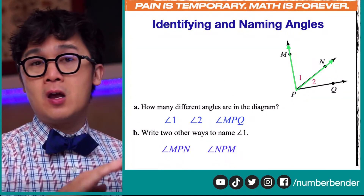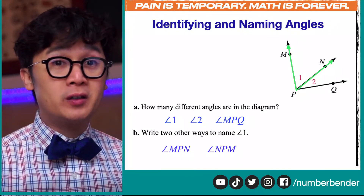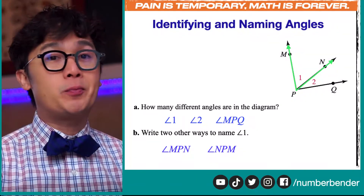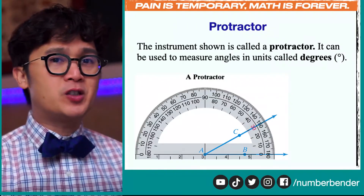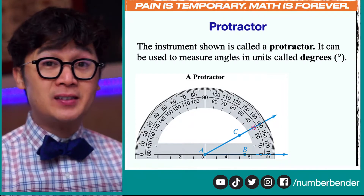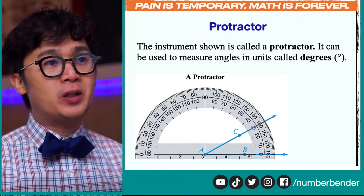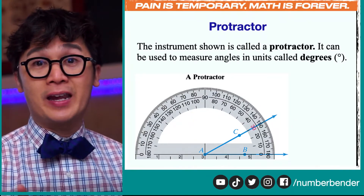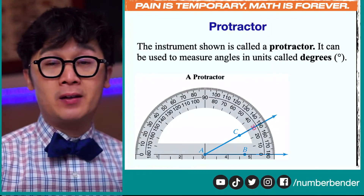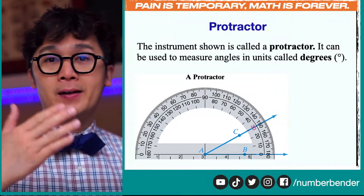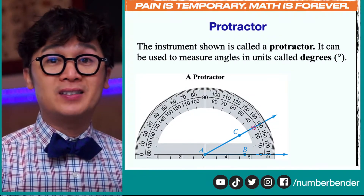These are the ways to name angles in geometry — a very important skill to understand the language of math. Speaking of the language of math, we also have tools that we use to measure angles. The instrument we use is called a protractor, and the unit of measurement we use for angles is called degrees.